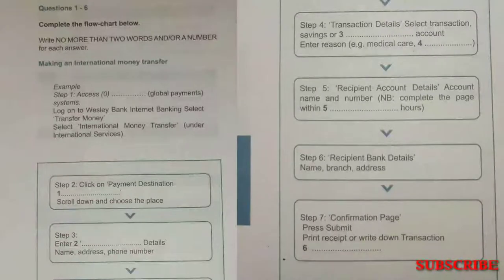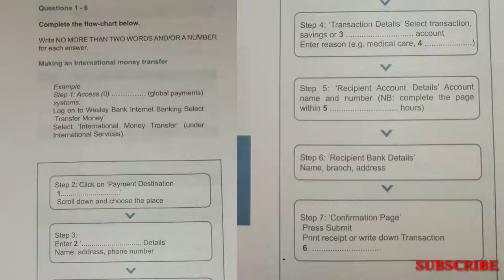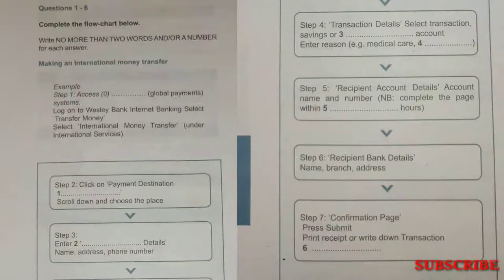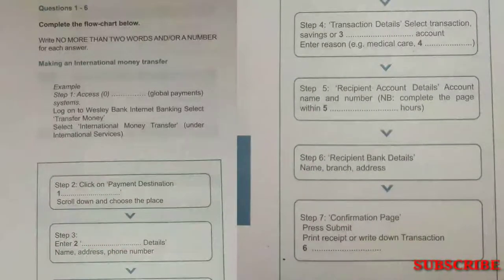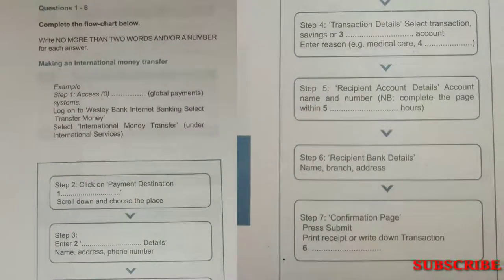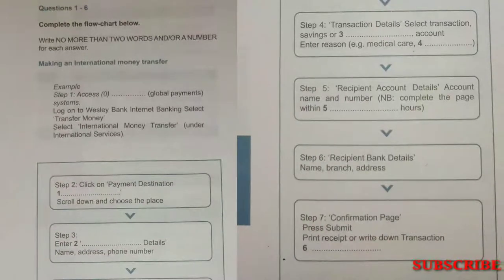That's fine. I can do it this evening. Is there much more? After the account details, you'll need to fill in the bank details of the person you're transferring money to — the name, branch and address of the bank. That should be easy enough. Anything else? No. Once you've completed everything, a confirmation page will appear. Just ensure all the information you've entered is correct and press Submit. Then print off the receipt page. If you haven't got a printer at home, just make a note of your transaction reference number.